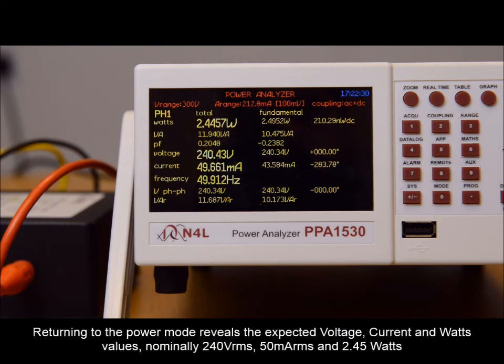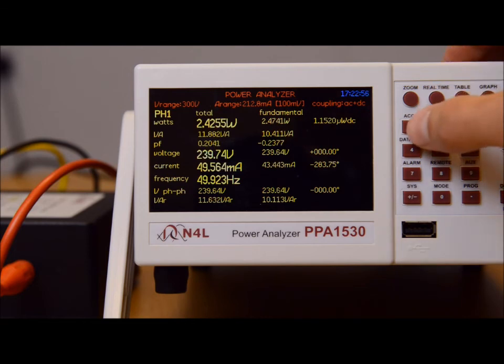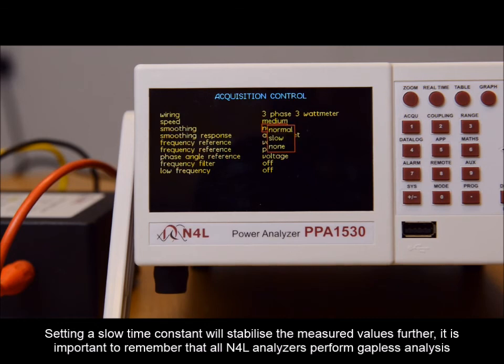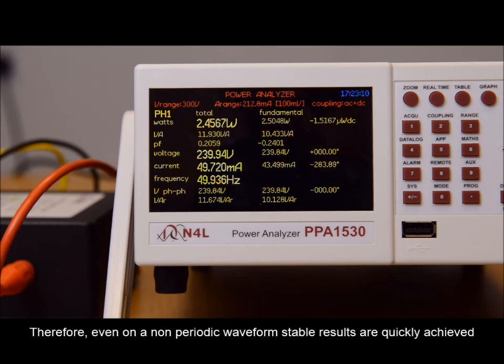If we enter the acquisition menu again, we can change our smoothing settings. Setting a slow time constant will stabilize the measured values further. It is important to remember that all N4L power analyzers perform gapless analysis, therefore even on a non-periodic waveform, stable results are quickly achieved.